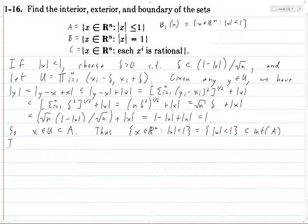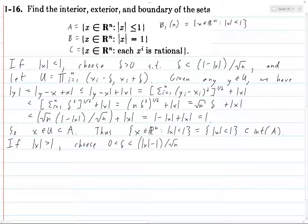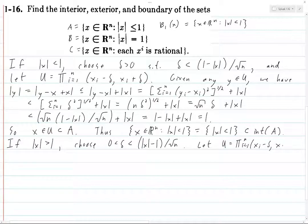Choose delta between zero and (norm of x minus 1) divided by the square root of n — we're just flipping it. Let U again be the direct product from i equals 1 to n of (xᵢ minus delta, xᵢ plus delta).